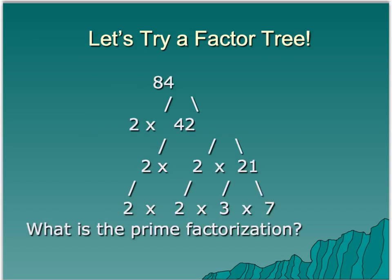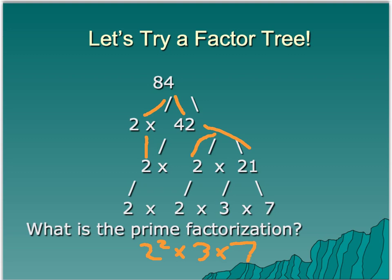Here's another factor tree, this time for 84. 84 breaks down into 2 and 42. 2 comes straight down. 42 breaks up into 2 and 21. And 21 still needs to be broken down because 21 is not prime — it breaks down into 3 and 7. The prime factorization, using exponents, is 2 squared times 3 times 7. With prime factorization, the factors have to go in order from smallest to biggest.